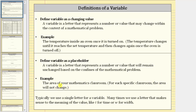So if a variable is used to represent this area, the variable is a placeholder. Typically we use a single letter for a variable. Many times we use a letter that makes sense to the meaning of the value, like t for time or w for width. Let's look at some examples.